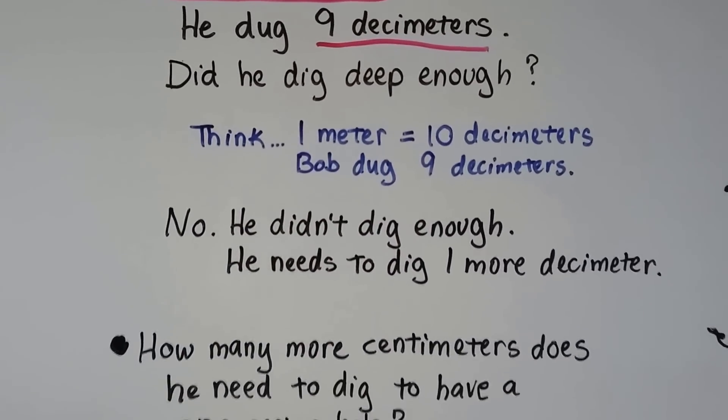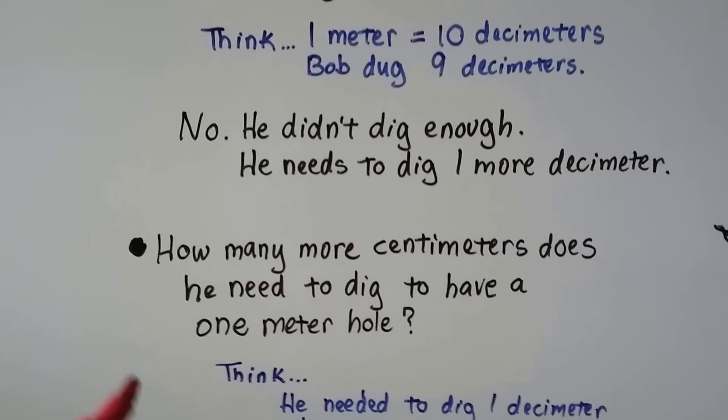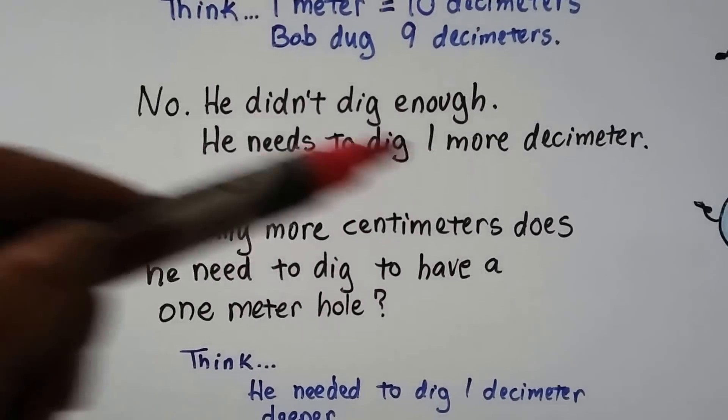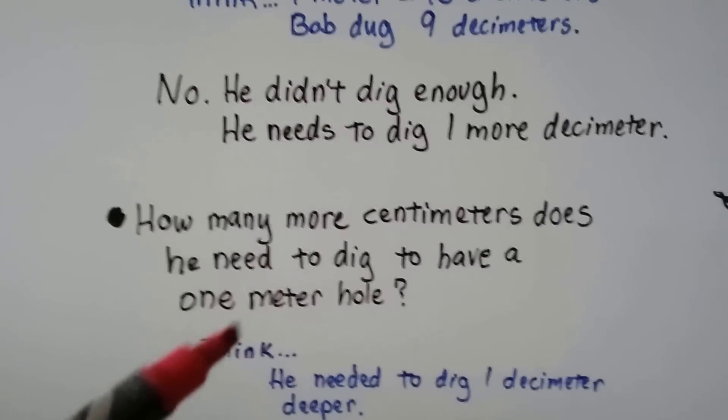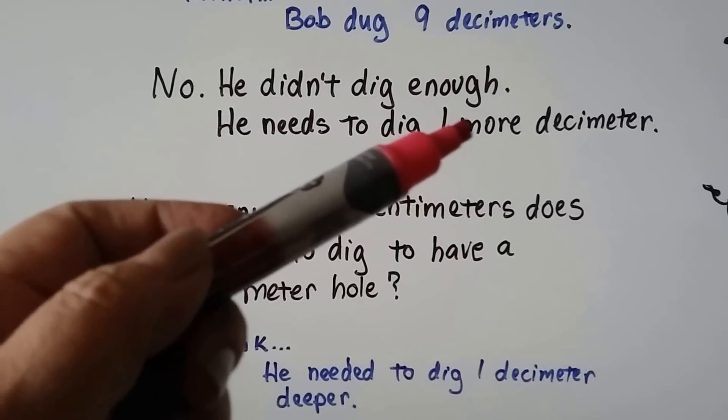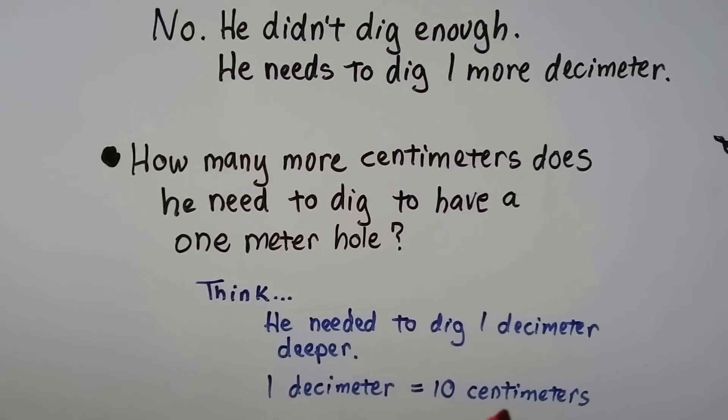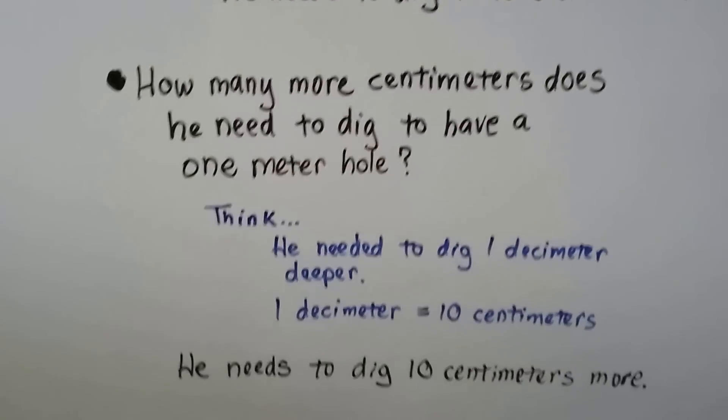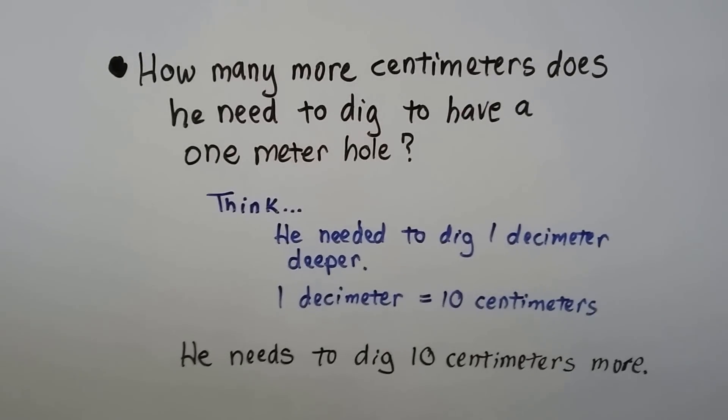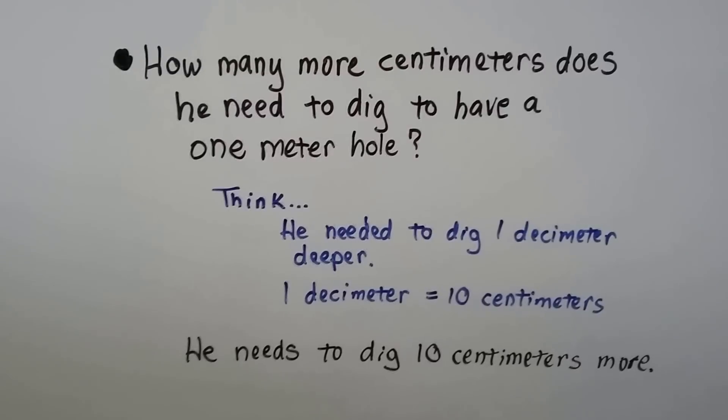Now, how many more centimeters does he need to dig to have a one meter hole? Let's think. What would it be in centimeters? He needed to dig one decimeter deeper, right? We know one decimeter is equal to 10 centimeters. So that means he needs to dig 10 centimeters more and he'll have his one meter deep hole. Does that make sense?